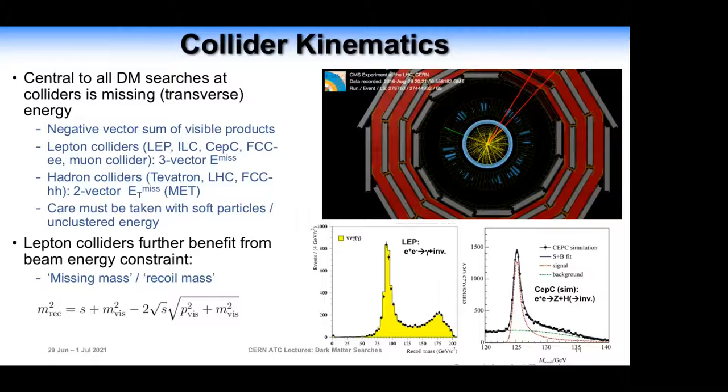We're going to be looking at WIMPs at colliders, and I thought it would be interesting to discuss the technique we use to identify dark matter signals — be that the LHC or lepton colliders like LEP and in the future possibly ILC, CEPC, FCC, or a muon collider. The basic signature is the same as in a direct detection experiment: it's an imbalance of momentum in your process. In a direct detection experiment, you see an atomic nucleus recoiling against nothing — it's been hit by something invisible and recoiled, which is an apparent non-conservation of momentum.